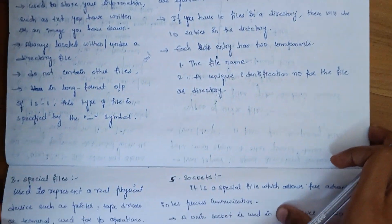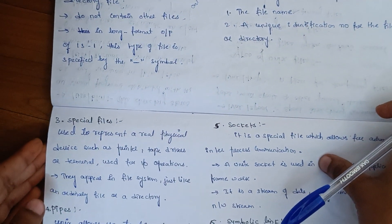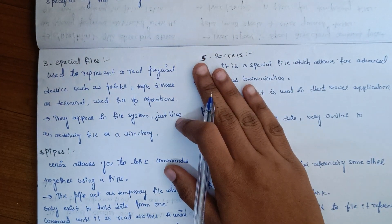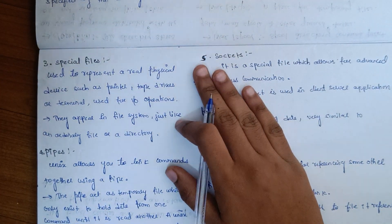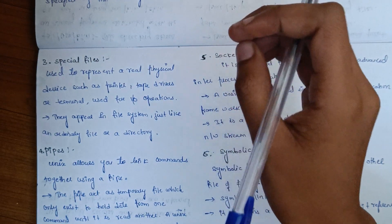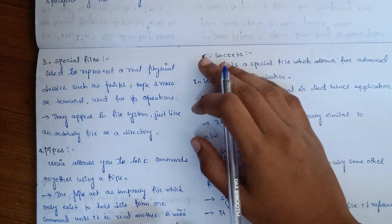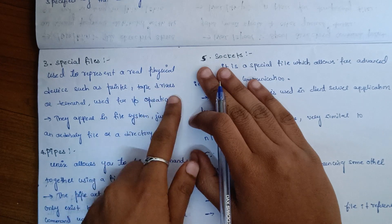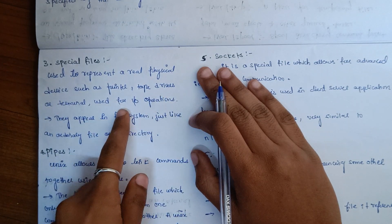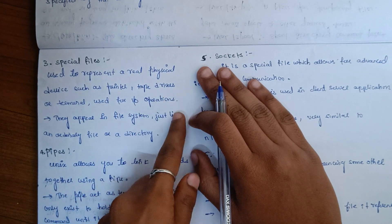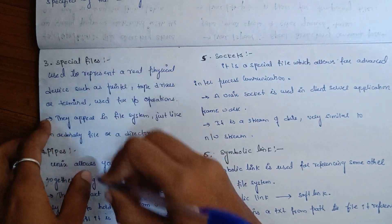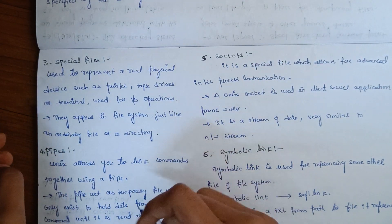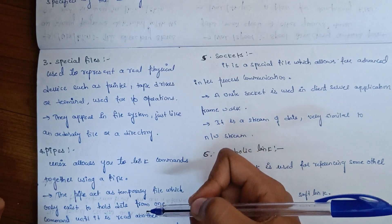The next type of file is special files. Special files are used to represent real physical devices such as printers, tape drivers, and terminals, used for input or output operations.